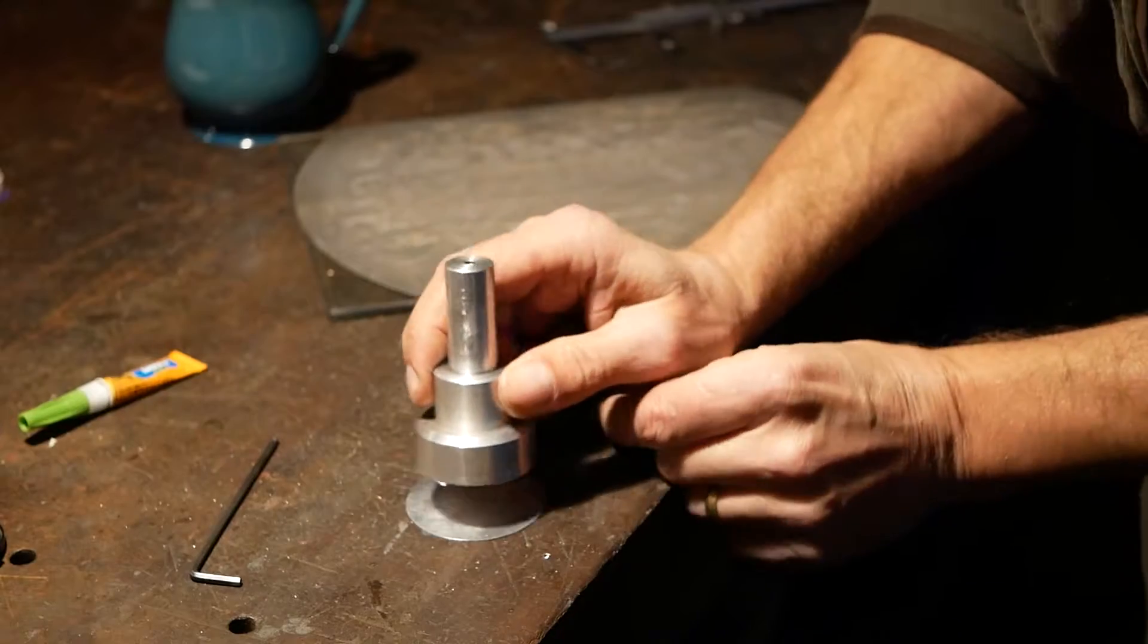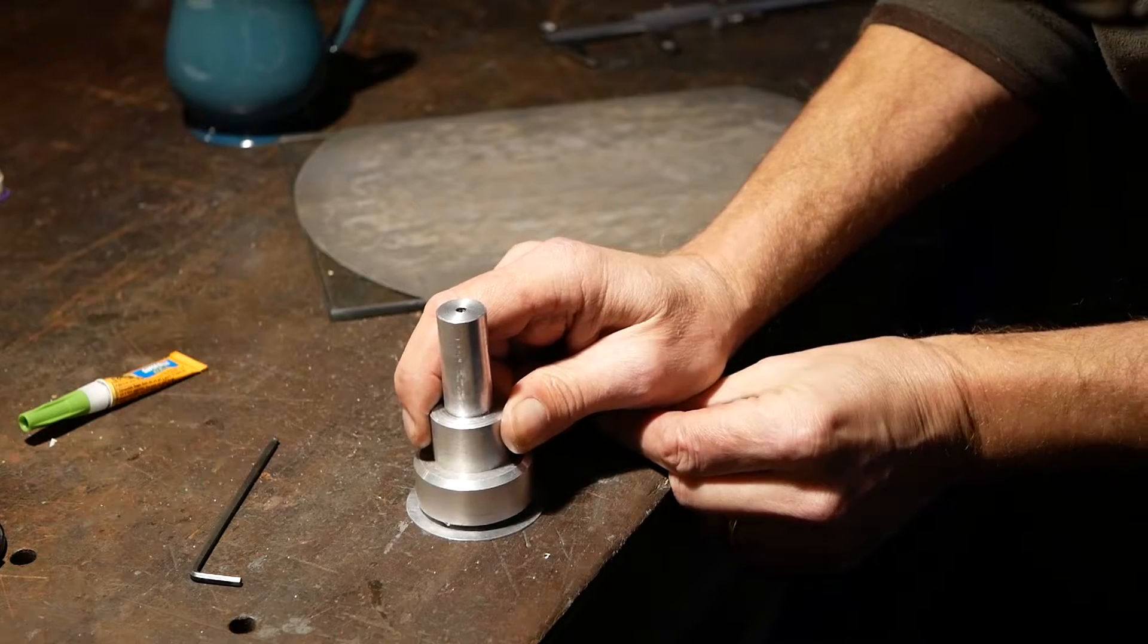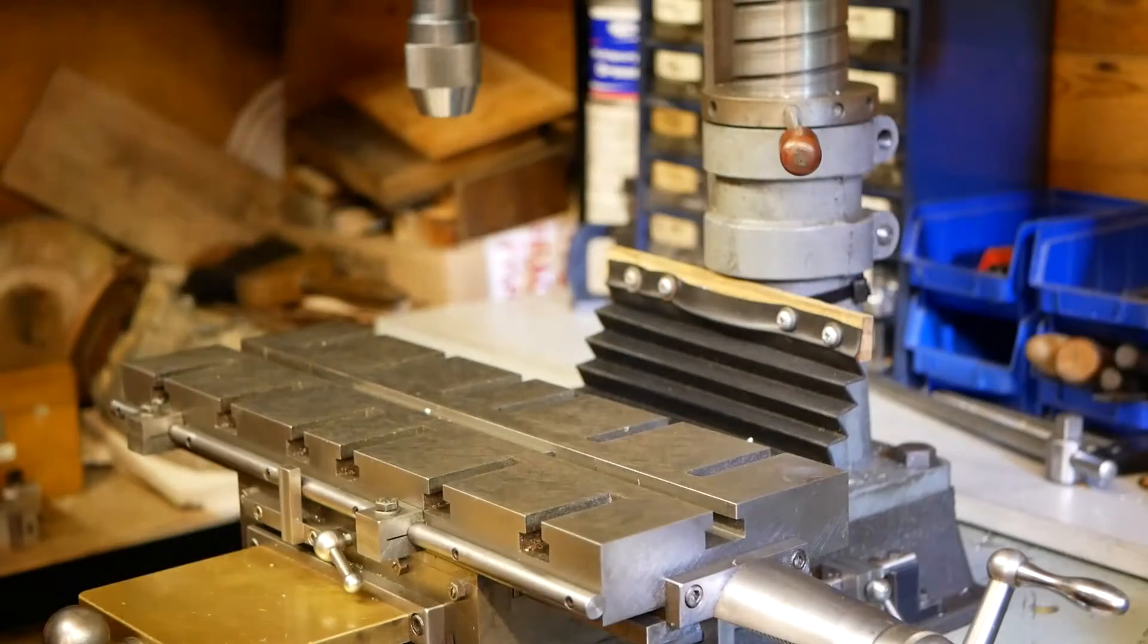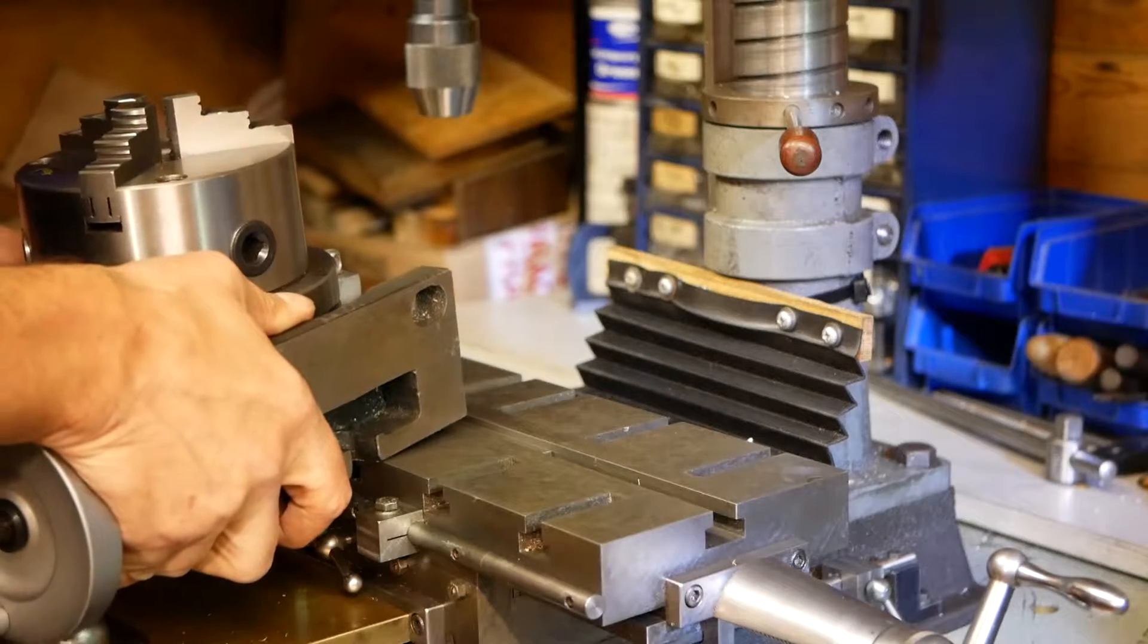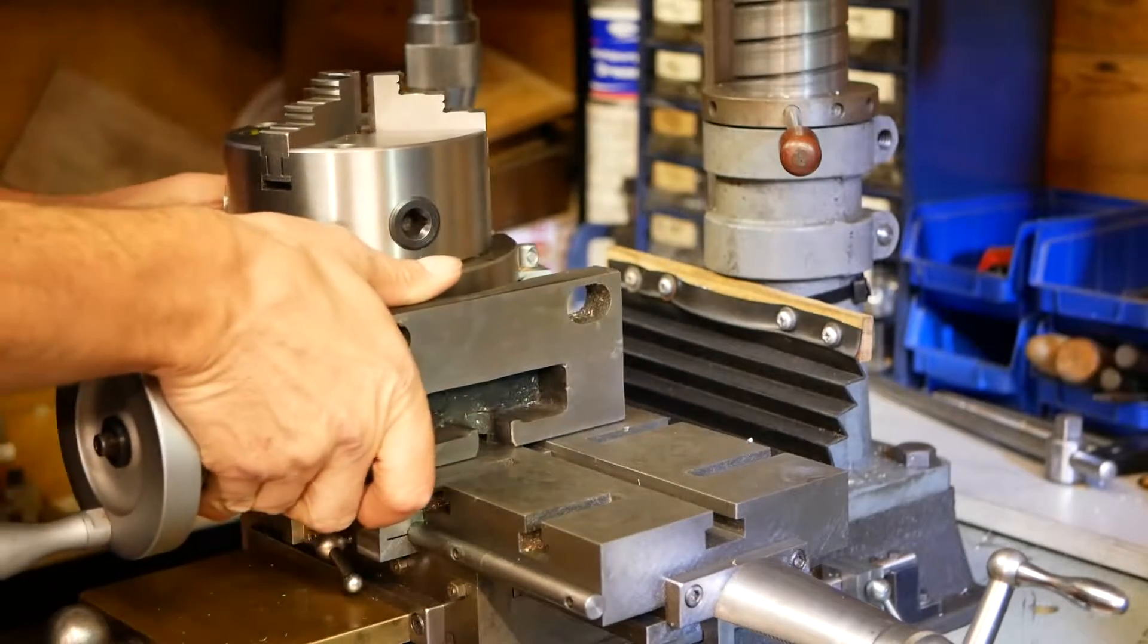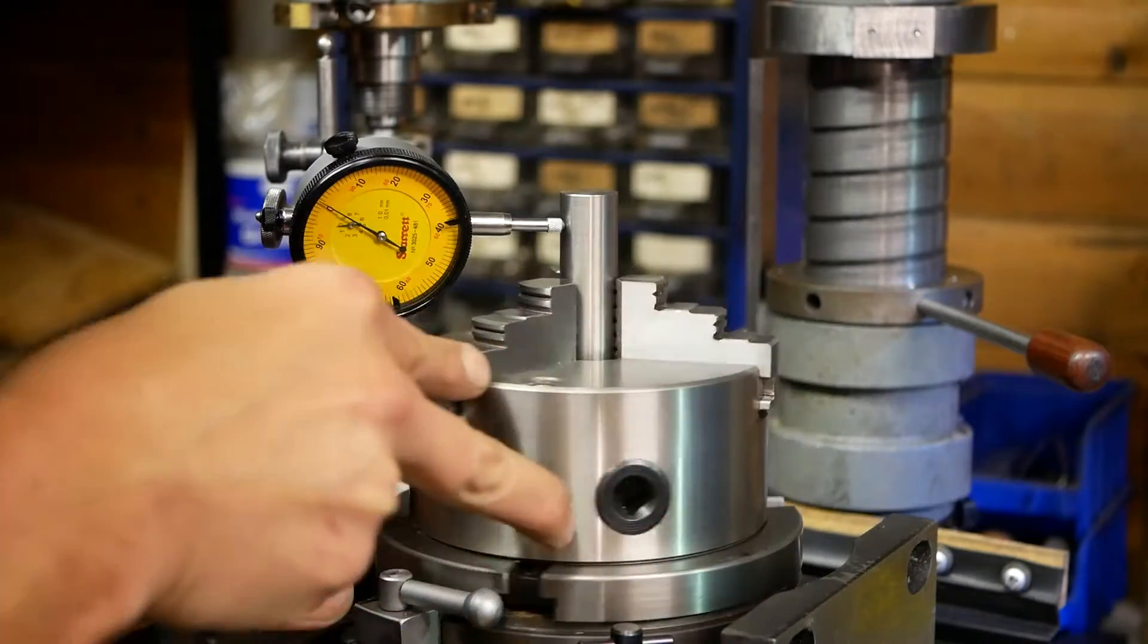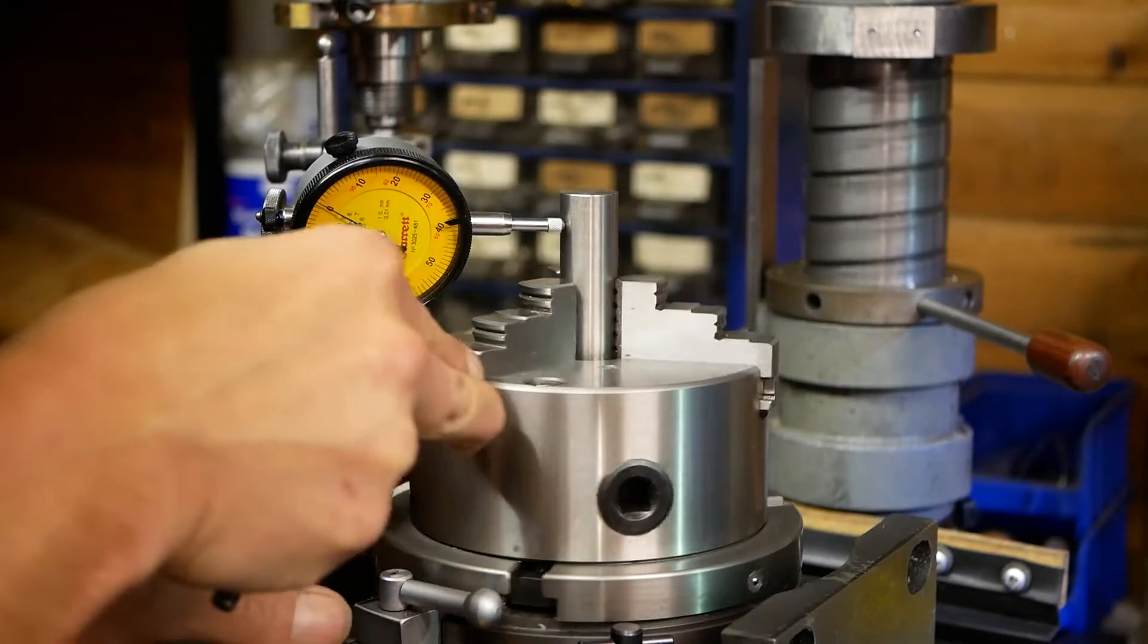We start by mounting a blank disc to a super glue arbor. The rotary table is mounted to the milling machine to form the outside of the dial. This is required to form a small tab which locates with the DTI to establish its orientation.